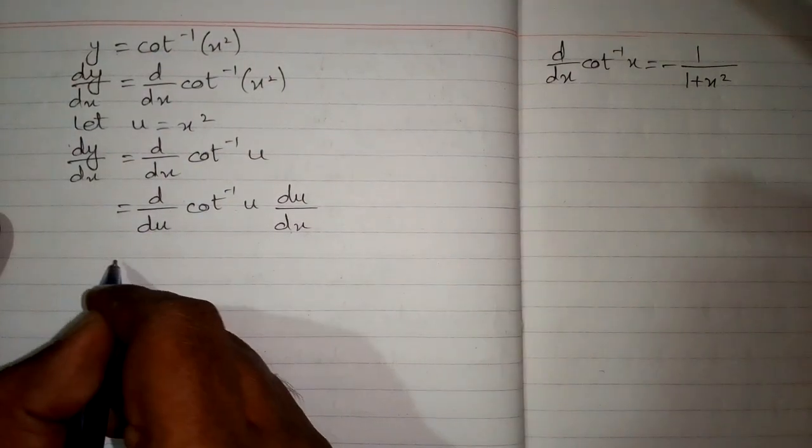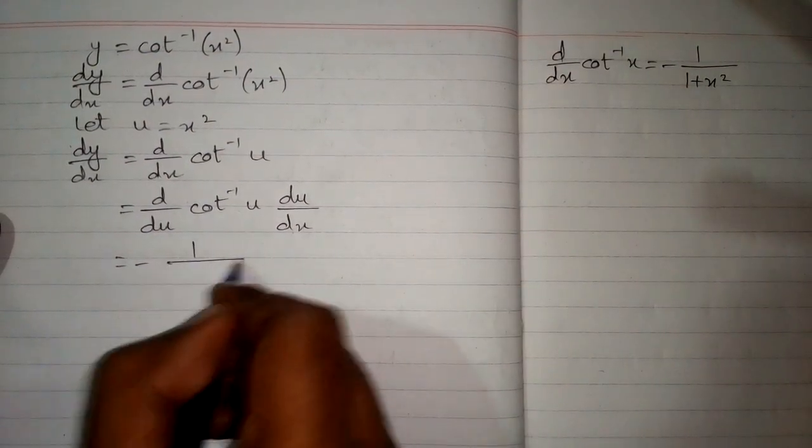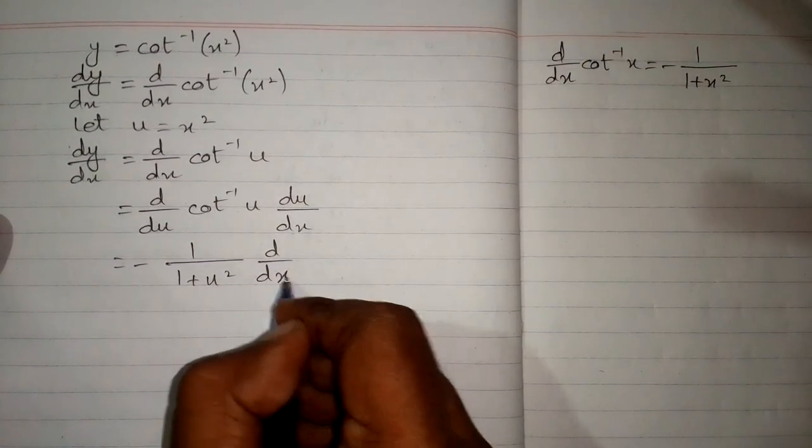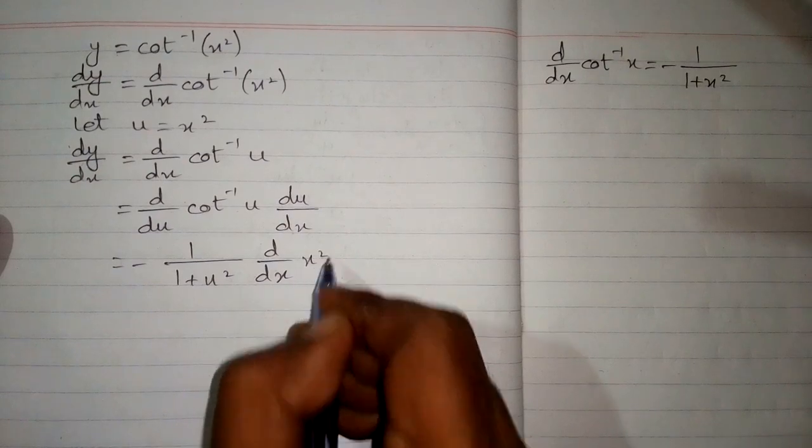Now we can apply this formula and we have minus 1 upon 1 plus u squared multiplied by the derivative of u, and u is x squared.